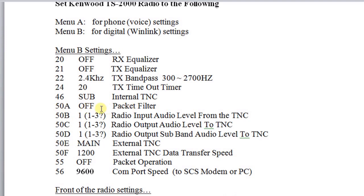50A is the packet filter — let's have that off. Items 50B, C, and D — set all of these to 1. That's the lowest setting. The range that you'll see for all of them is 1 to 3, but let's start off with 1, and then you can make adjustments as you need to increase those levels.